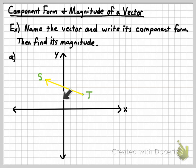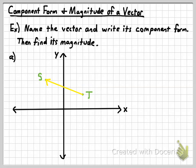If I wanted to name this vector right here, I have to name it using its initial point first and then its terminal point. So we would call this vector TS. You can write out 'vector TS' or write that symbolically — write the initial point first, then the terminal point, and put that little half-ray or vector symbol right above it. Right after that, I'm going to write the component form for the vector.